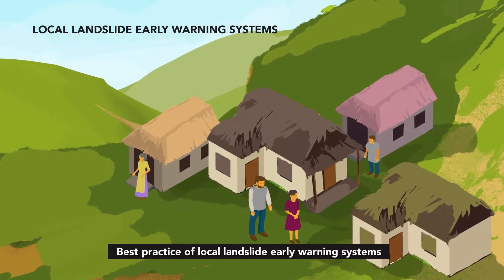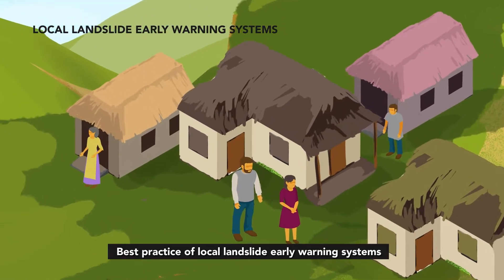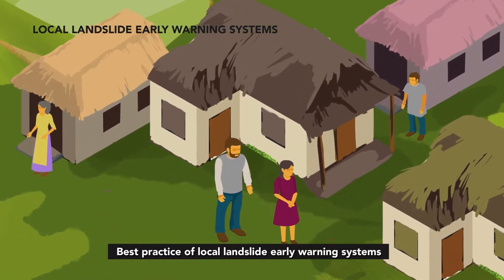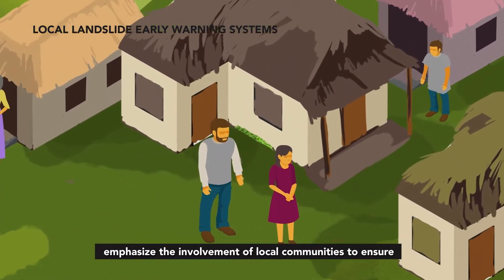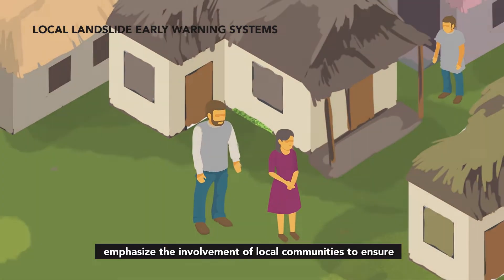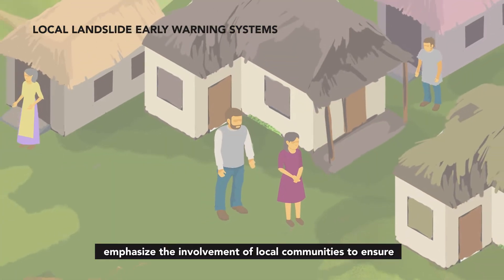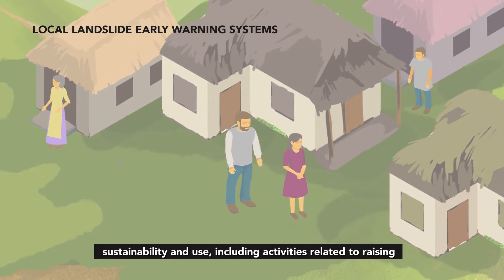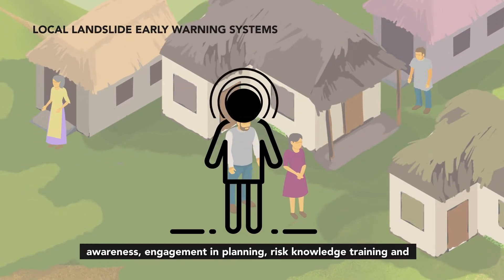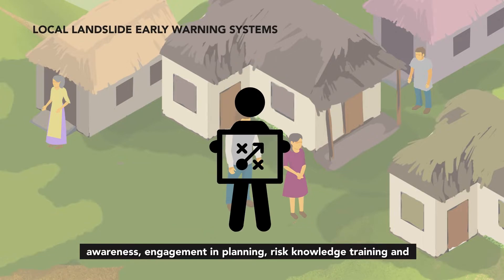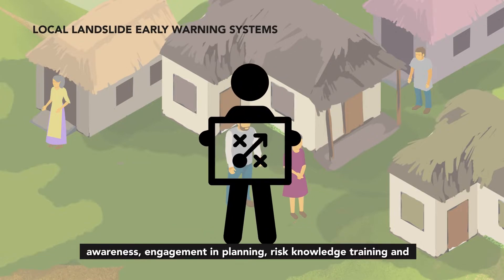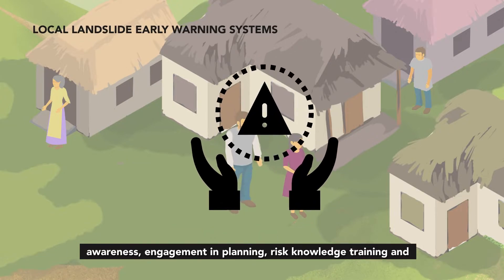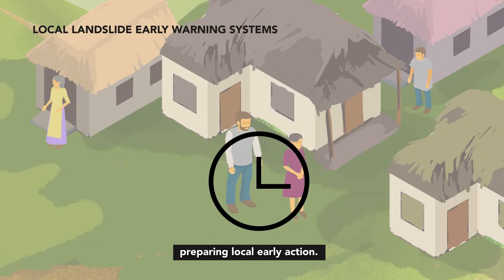Best practice of local landslide early warning systems emphasizes the involvement of local communities to ensure sustainability and use, including activities related to raising awareness, engagement in planning, risk knowledge training and preparing local early action.